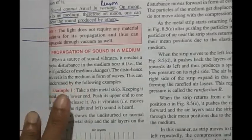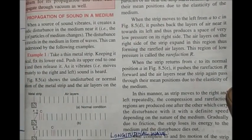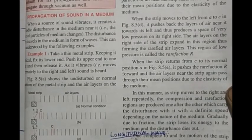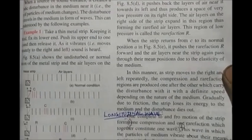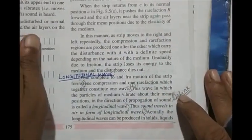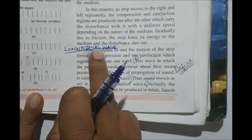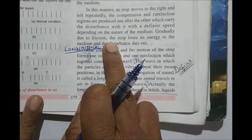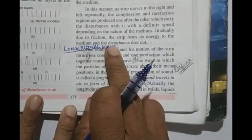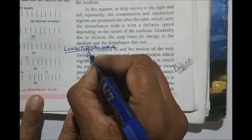Now come to the actual topic: propagation of sound. Through the videos you would have understood that there are two types of waves — longitudinal wave and transverse wave. The main content you have to know starts from here. Write the heading: longitudinal wave, and mark this as the first point.